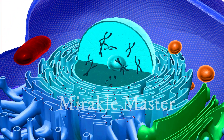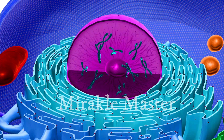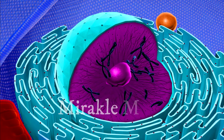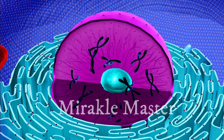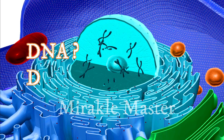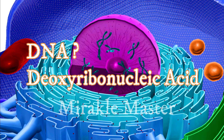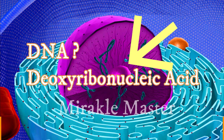The nucleus is located in the center of the cell. It is a large organelle that contains the cell's genetic information. The genetic information stored in the nucleus is in the form of DNA, i.e., deoxyribonucleic acid.